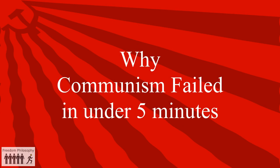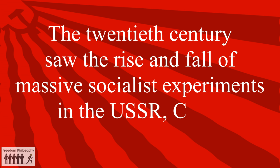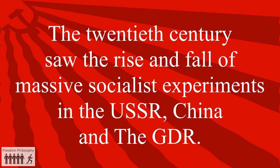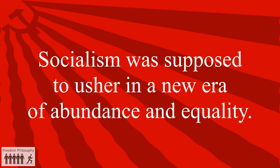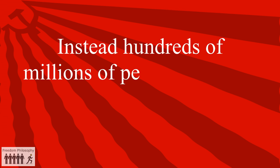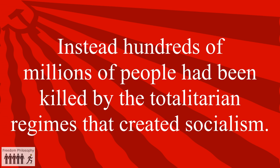Why Communism Failed in Under 5 Minutes. The 20th century saw the rise and fall of massive socialist experiments in the USSR, China, and the GDR. Socialism was supposed to usher in a new era of abundance and equality. Instead, hundreds of millions of people had been killed by the totalitarian regimes that created socialism.